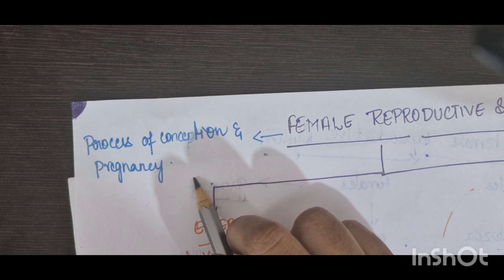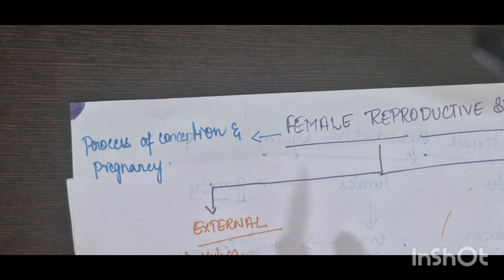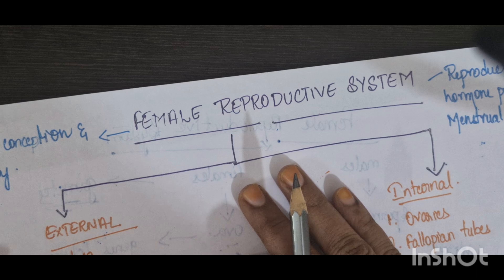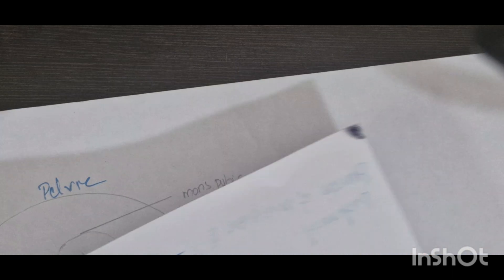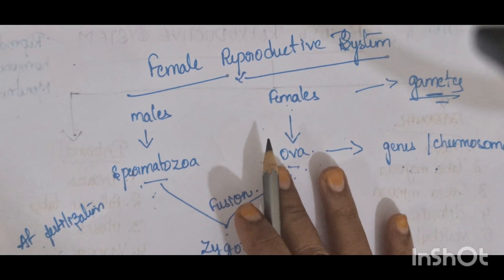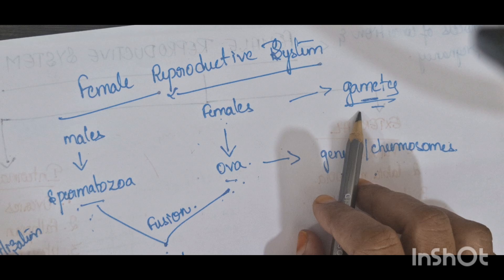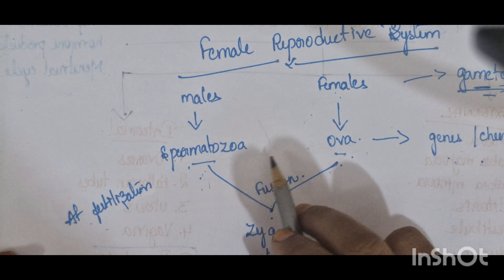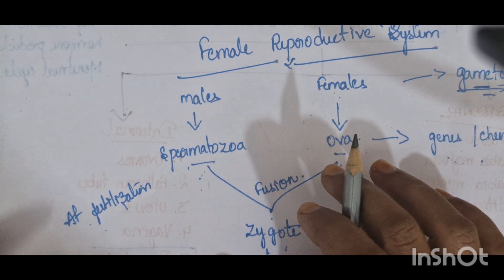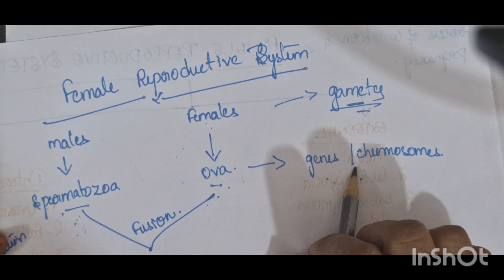Before going into the female reproductive system in detail, we will first learn about the reproductive germ cells which help for conception. Both males and females have reproductive germ cells called gametes. The male gamete is called spermatozoa and the female gamete is called ova. These are specialized cells that carry genes and chromosomes to the next generation.